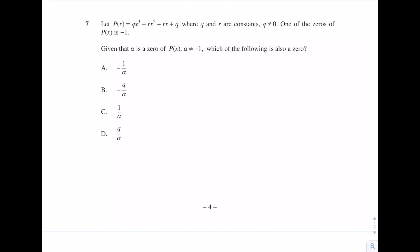Question 7. Let P(x) = qx³ + rx² + rx + q, where q and r are constants and q is not 0. One of the zeros of P(x) is -1. Given that α is a zero of P(x), and α is not equal to -1, which of the following is also a zero? So here we have a polynomial of degree 3, and we know that -1 is a root, we know that α is a root, and we're trying to find the other root of the polynomial. So let's call that root β. Now we want to find what β is in terms of, it seems when we look at the answer, in terms of α. So what are we going to do to get this? Well, we're going to look at our relationships between the sums and products of the roots and the coefficients of the polynomial.